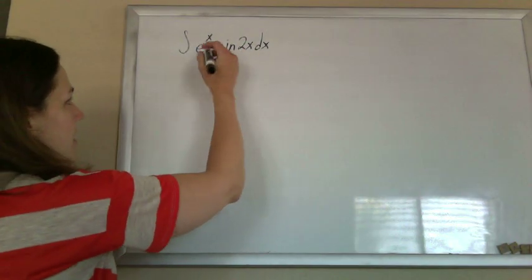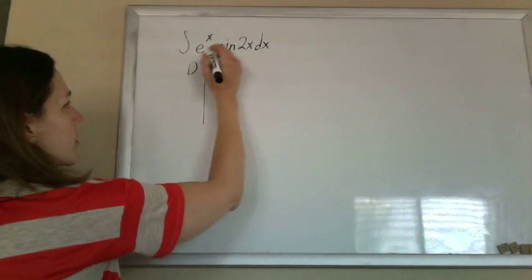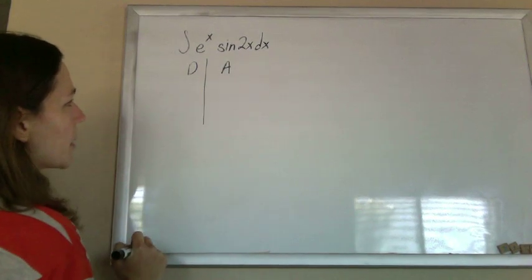All right, so I see a product, don't know what else to do, so I'm thinking product rule backwards, integration by parts.